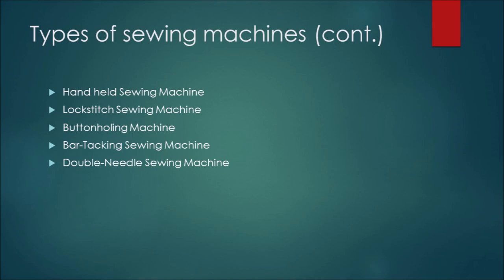Number nine: buttonholing machine. It creates a buttonhole as it has a double chain stitch.